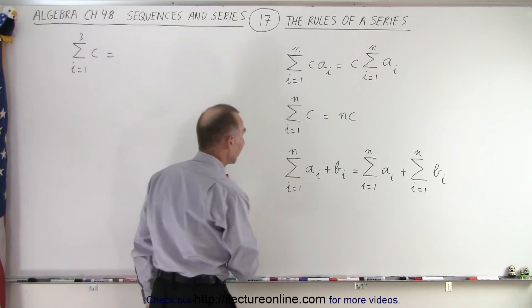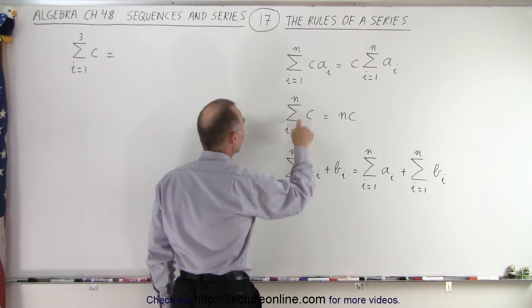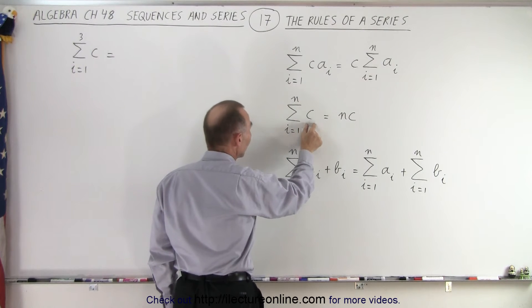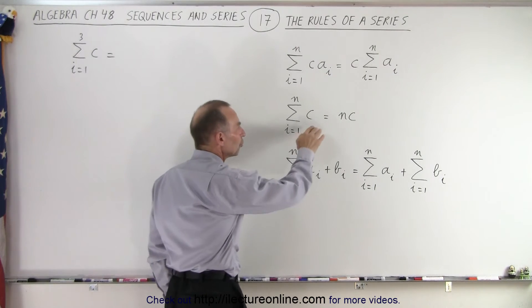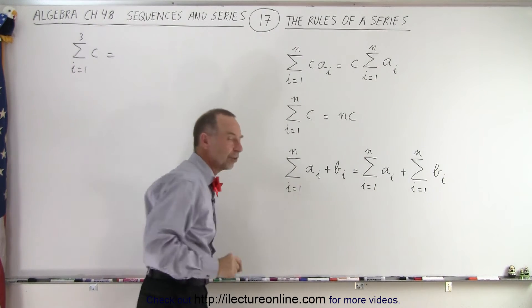If we have something that looks like this, the sum from i equals 1 to n of just a constant, that is equal to the number of terms n times the constant. Even though there's no i in there, this will be the result of that.